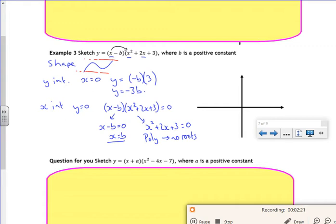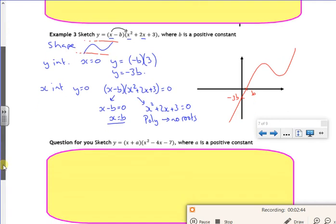So I might have a graph. I'm going to draw this different to how it's done in the pack. So it could look like that. So I've got a b there for where it crosses on the x-axis, and a minus 3b there. So there's no reason why that can't work like that.